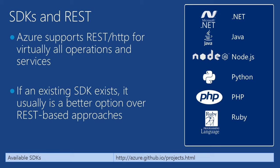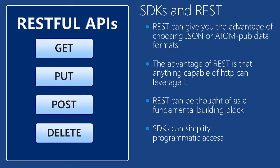You can find a list of all the available SDKs at the link at the bottom — they're on GitHub. While SDKs can simplify programmatic access, REST does have its advantages. There on the left, you can see the various RESTful API verbs that are used: GET, PUT, POST, and DELETE. Normally, REST operations are associated with one of those HTTP verbs.